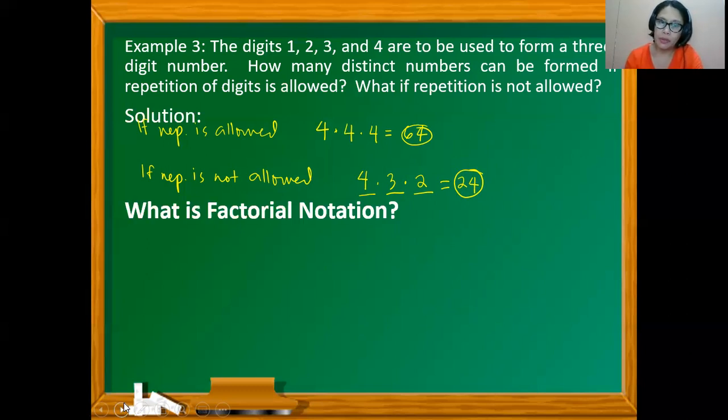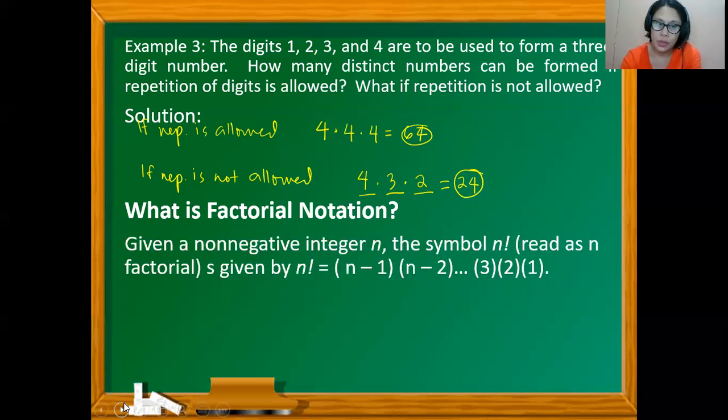Now, what is a factorial notation? Because of the abundance of real-life situations that involve the fundamental counting principle, mathematicians found the need to introduce a special notation for the product of consecutive integers. This applies especially to the combinatorics of events that do not allow repetition. Thus, we have the factorial notation which is defined as follows. So given a non-negative integer n, the symbol n factorial, and this is read as n factorial, is given by n factorial equals n times (n minus 1) times (n minus 2) times 3 times 2 times 1. So this is what we mean by n factorial.